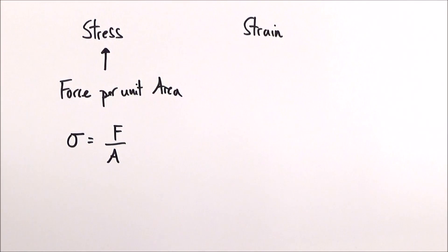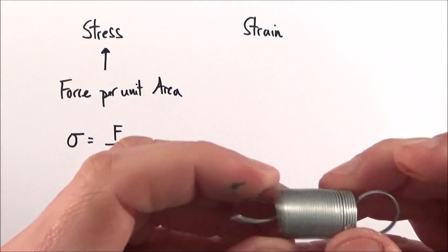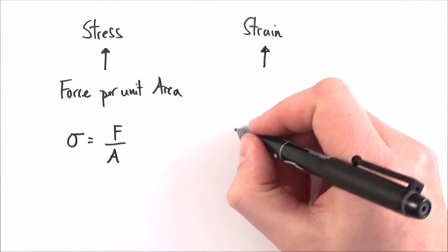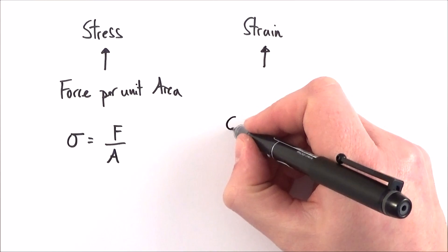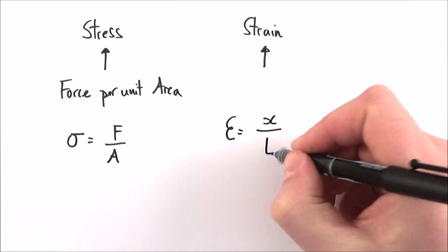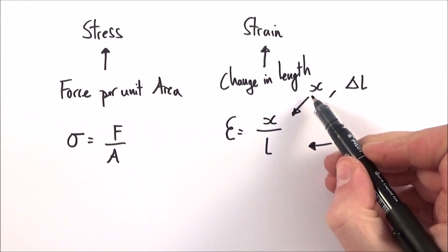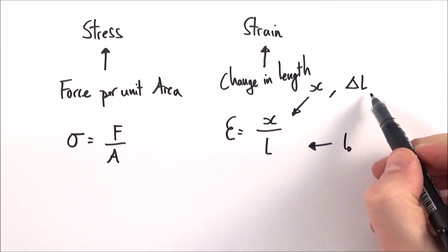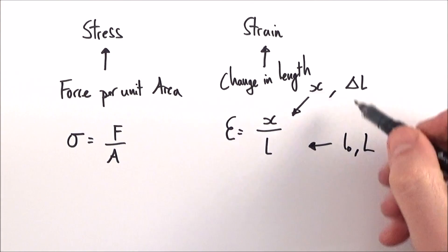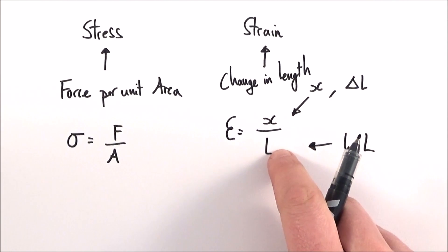If you have something which is being stressed, then it will change shape. And strain tells us how much something changes shape compared to its original length. The symbol for strain is epsilon, and that's equal to the extension over the original length. Just be aware that sometimes this extension is also given the symbol delta L, and sometimes the length might be L-nought or a capital L. It doesn't really matter about the symbols — this is effectively how much something got bigger compared to its original length.